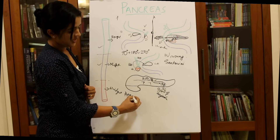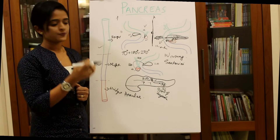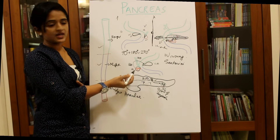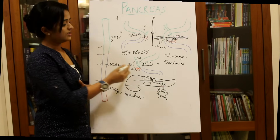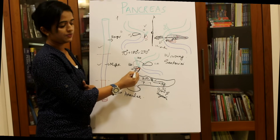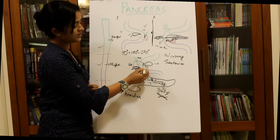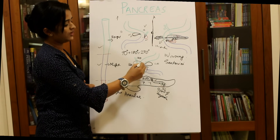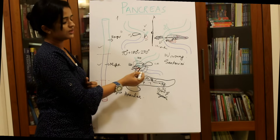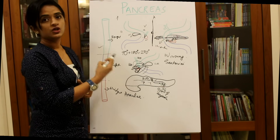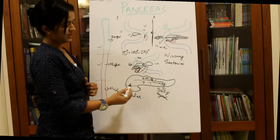Now for the applied aspect of pancreatic development: the most important anomaly is annular pancreas. The word 'annular' means something which encircles. We mentioned that the ventral pancreatic bud initially develops as a bilobed mass that later fuses into a single mass. At times, this bilobed mass remains separate, and when it tries to reach the dorsal pancreatic bud, one bud encircles through the anterior aspect and the other through the posterior aspect of the second part of the duodenum, resulting in duodenal obstruction.